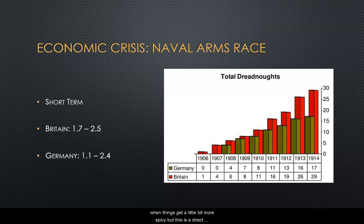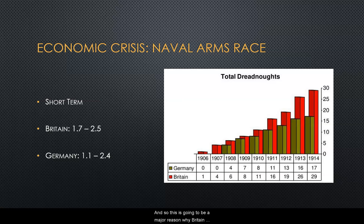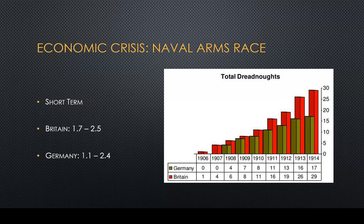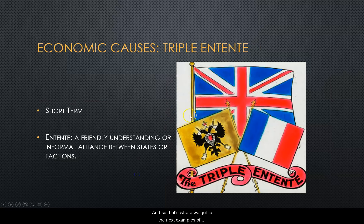This was a direct assault and a direct threat to the British Navy, thus threatening their economic power in the world. This is going to be a major reason why Britain decided they need to do something about Germany. Now that Germany had aggravated both Britain and France, they wanted to form an alliance — and that leads us to our next example of economic causes: the Triple Entente.